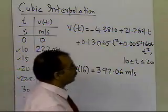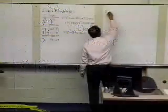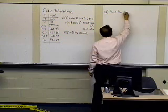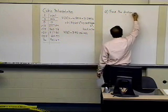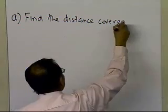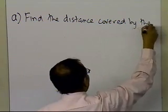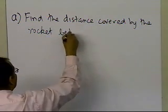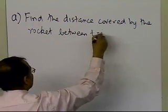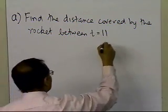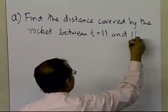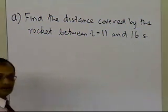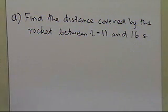For example, if somebody tells you to find the distance covered by the rocket between t equal to 11 and 16 seconds, we're not asked to find the velocity at 16, but the distance covered from 11 to 16.